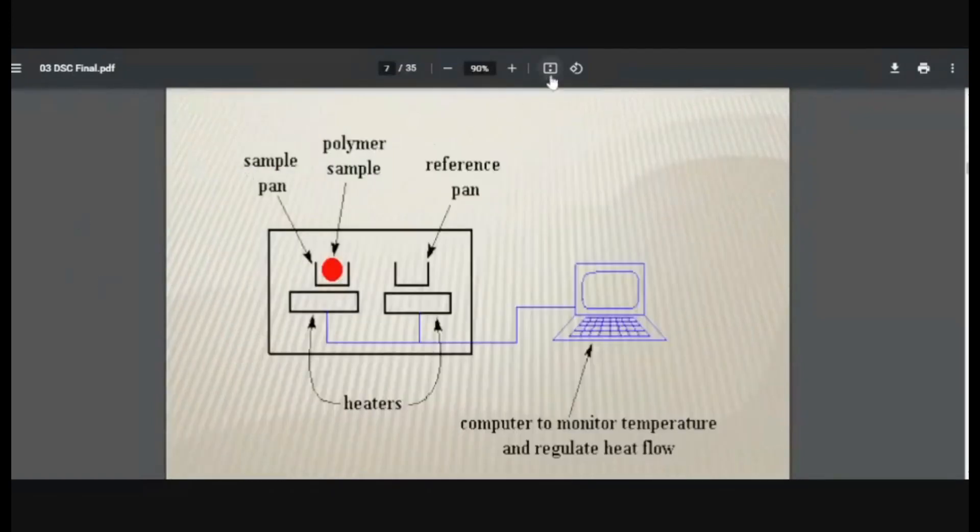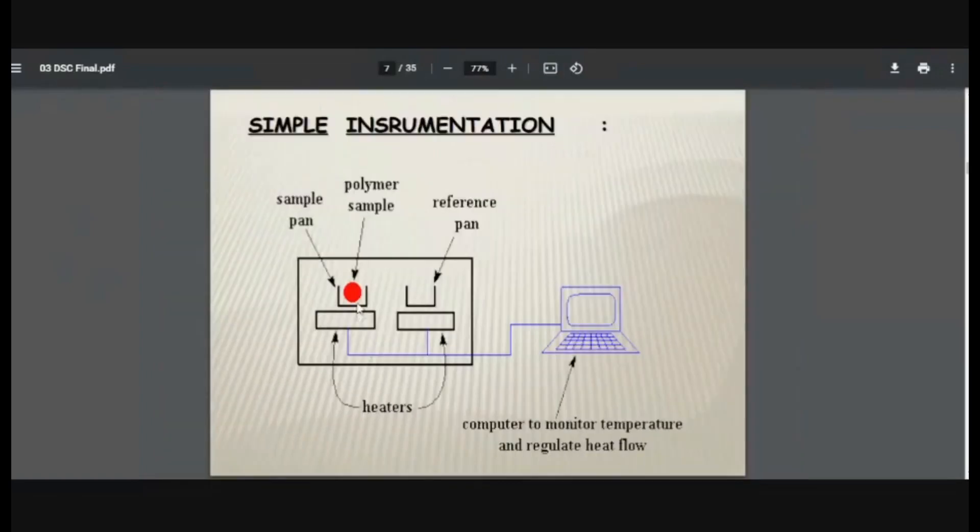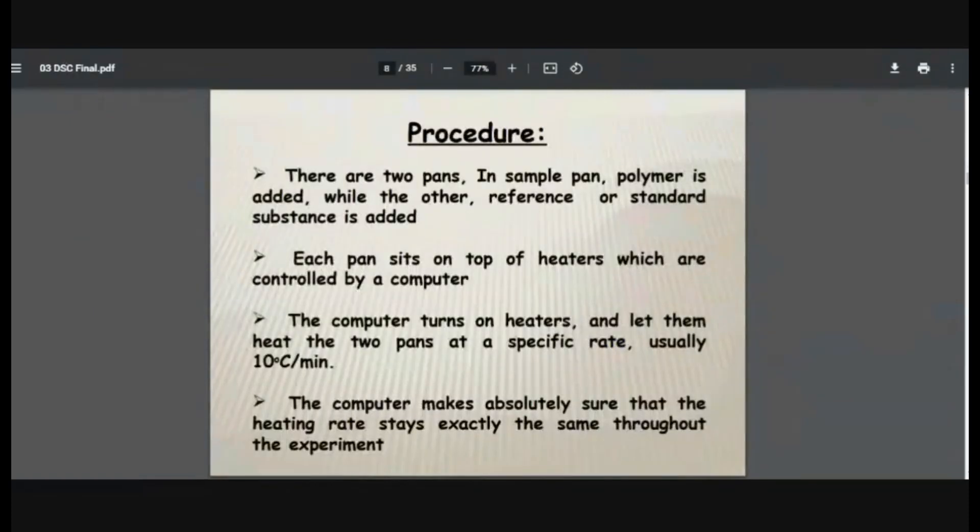Let us proceed then. This is how the instrument looks like. We have sample pan in which there is sample, say polymer is kept. There is reference pan. There may be some reference added, or it may be simply empty reference pan. Then there are two heaters provided. Both the heaters are attached to a monitoring system, differential scanning instrument. And so heat that is provided to both sample and reference pan is measured, and the difference is being calculated by the differential scanning calorimetry.